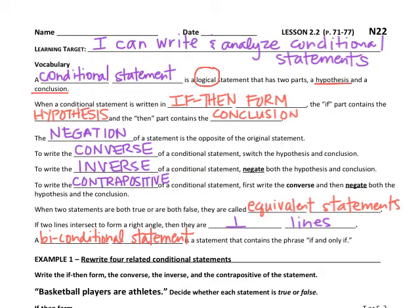When a conditional statement is written in the if-then form — so it would say if this, then that — the if part contains the hypothesis and the then part contains the conclusion. You should be familiar with this form, and you will be learning today how to put a regular statement into an if-then statement.